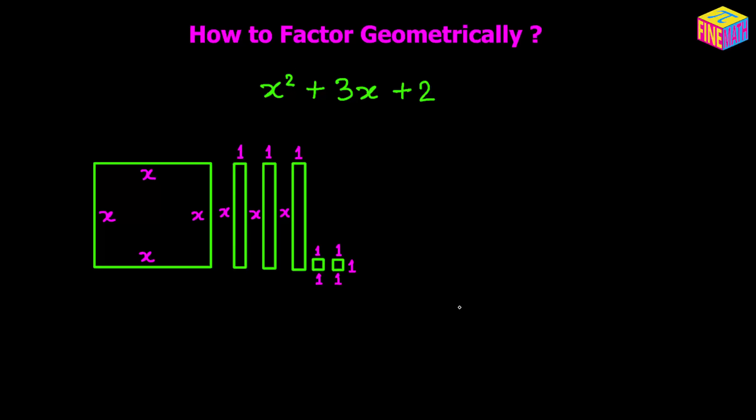Let's imagine that each term in this expression represents a piece of area. What would be the area represented by x squared? It will be the area of a square whose side length is x units, and I have such a square drawn on the left hand side — the larger square where each side is of x units.